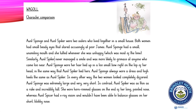Aunt Sponge and Aunt Spiker were two sisters who lived together in a small house. Both women had small beady eyes that stared accusingly at poor James. Aunt Sponge had a small, unsmiling mouth and she tutted whenever she was unhappy, which was most of the time. Similarly, Aunt Spiker never managed to smile and was more likely to grimace at anyone who came too near. Aunt Sponge wore her hair tied up in a too-small bow right on the top of her head, in the same way that Aunt Spiker tied hers.